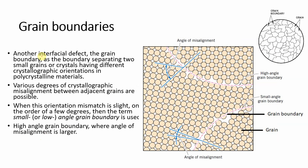Grain boundaries: another interfacial defect is the grain boundary, which is a boundary separating two small grains or crystals having different crystallographic orientations in a polycrystalline material. In a polycrystalline material you can see regions where crystallographic orientations differ, and the boundary between them is called a grain boundary defect.